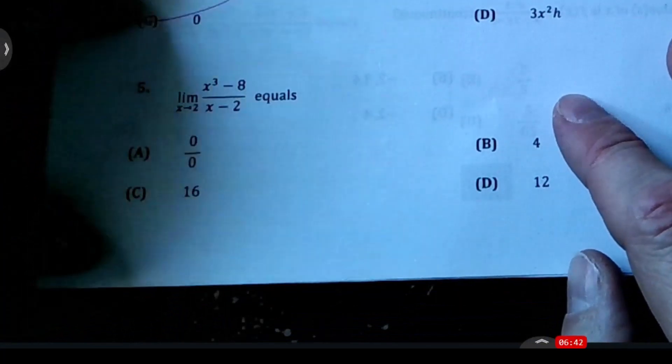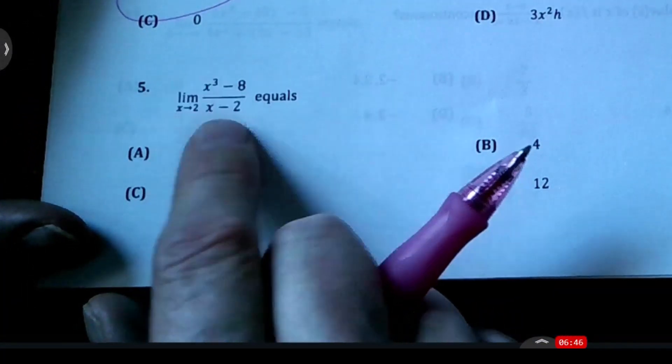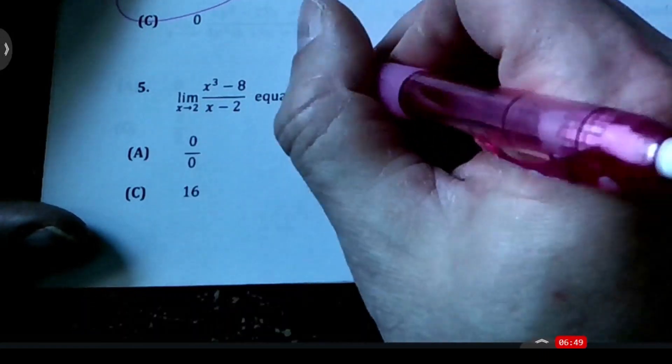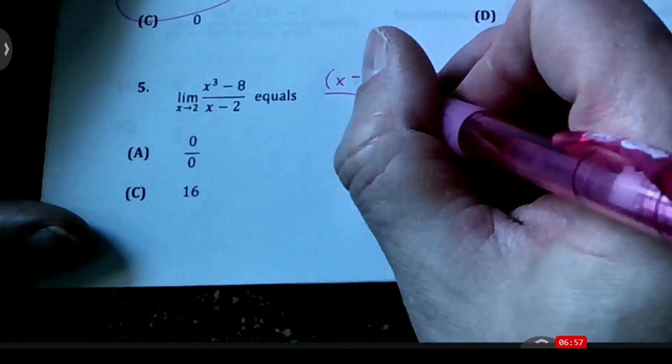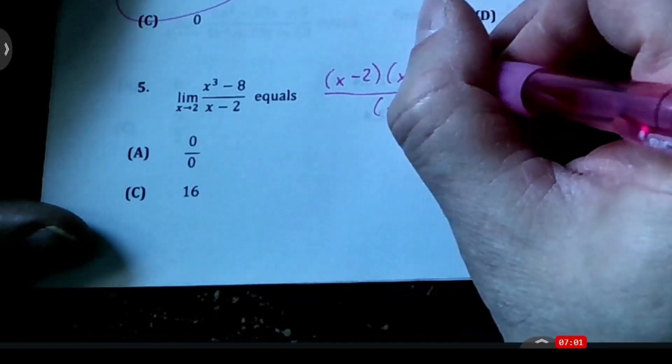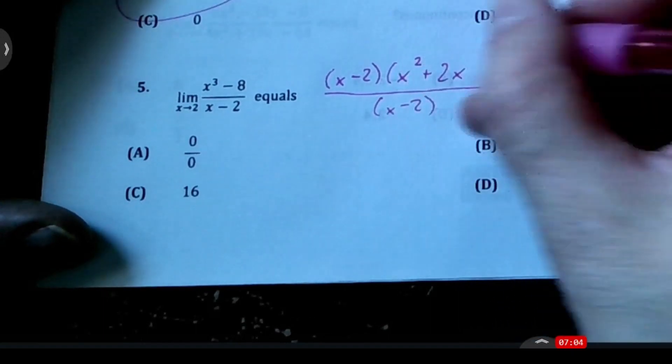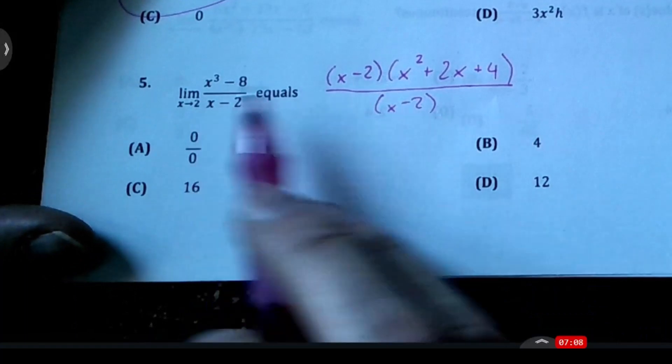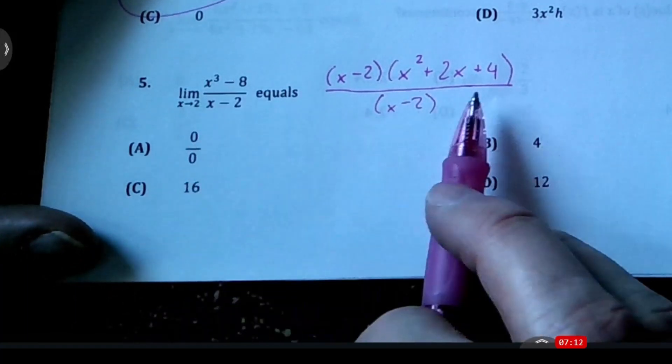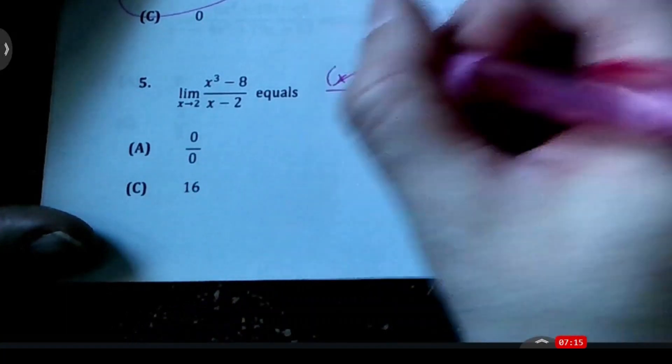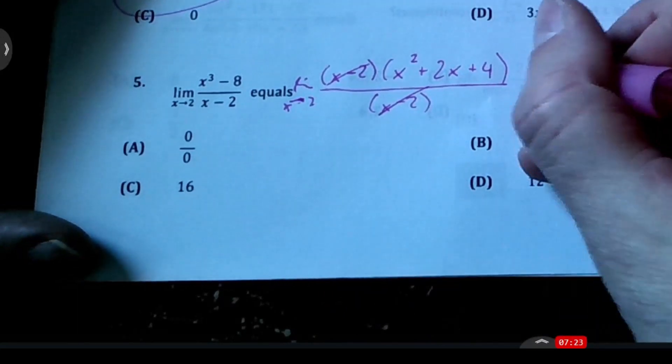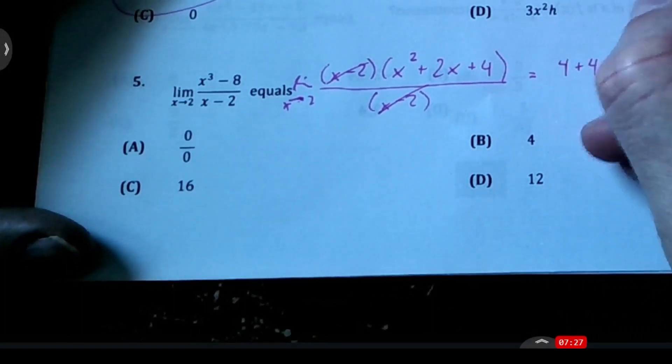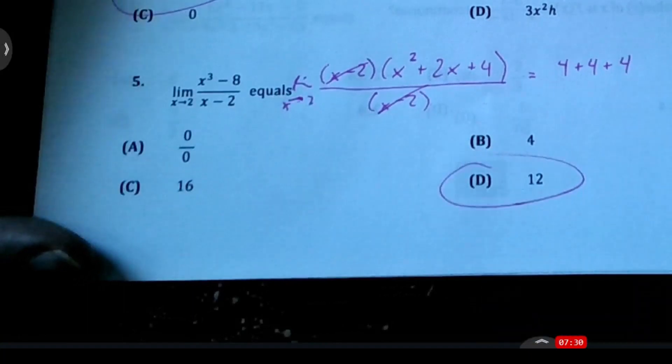If you're sending each of those h's to zero, these guys go to zero and you're left with 3x². Now for the next limit, this would give us 0/0, but we can factor this. We have x - 2, and this is the difference of two cubes, so it factors as x² + 2x + 4. These cancel because we're taking the limit as x goes to 2. When I plug in 2, I get 4 + 4 + 4, that's 12.